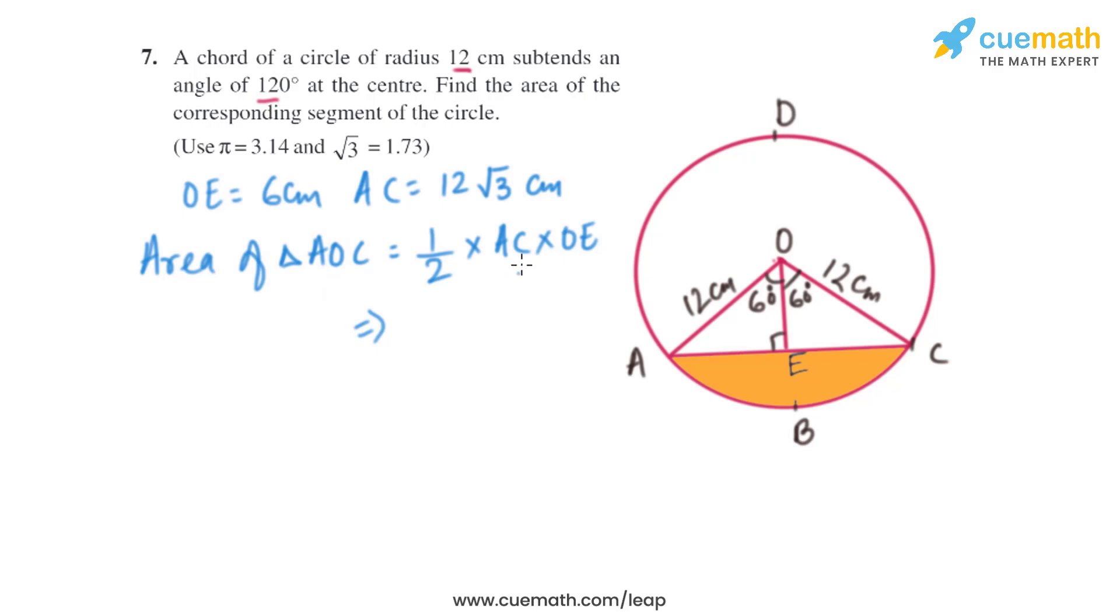Now let's find the area of triangle AOC: half into base AC into height OE. That is half multiplied by 12 root 3 multiplied by 6. From here we get the area of triangle AOC as 62.28 square centimeters.